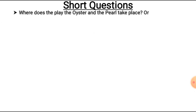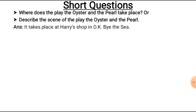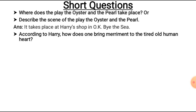Question number one: Where does the play 'The Austere and the Pearl' take place? Describe the scene of the play. The answer is: it takes place at Harry's shop. Harry is the main character, and this drama takes place at his shop in Okibydesea, which is the name of the town.